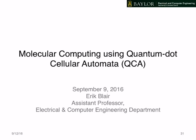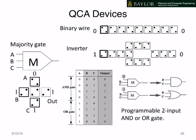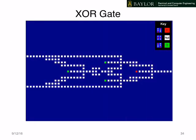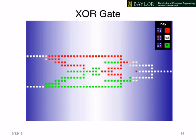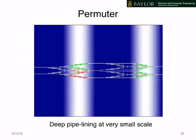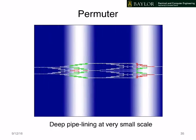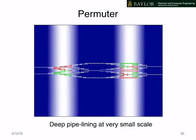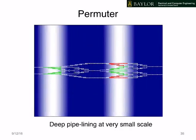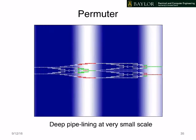That brings us to the end of this talk. We have looked at an overview of molecular QCA, where I showed you how basic QCA devices work, how we put them together to make simple circuits, and then how we put those simple circuits together to make more complex circuits. The next talk will focus more on research that I've done recently in QCA. Thank you for your attention.